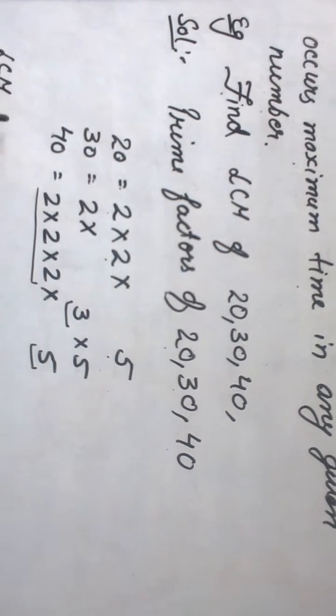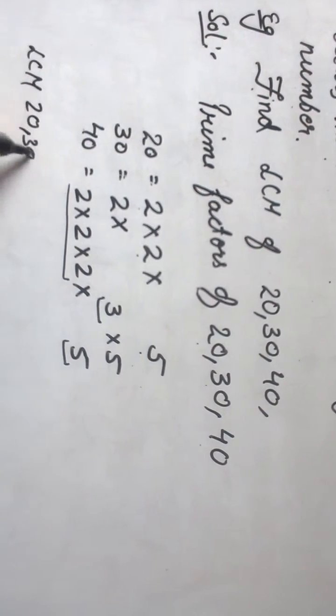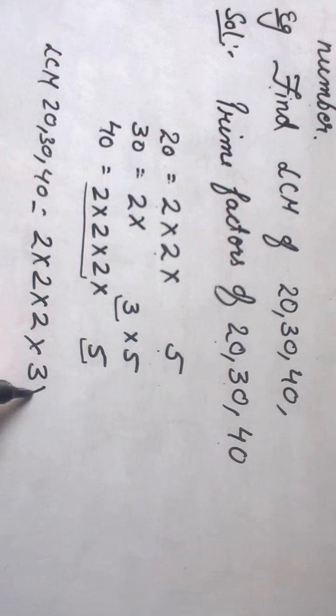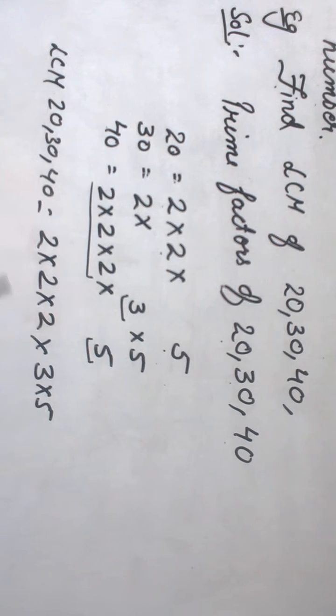So the LCM for 20, 30 and 40 will be calculated as 2 into 2 into 2 into 3 into 5. And when we calculate this,